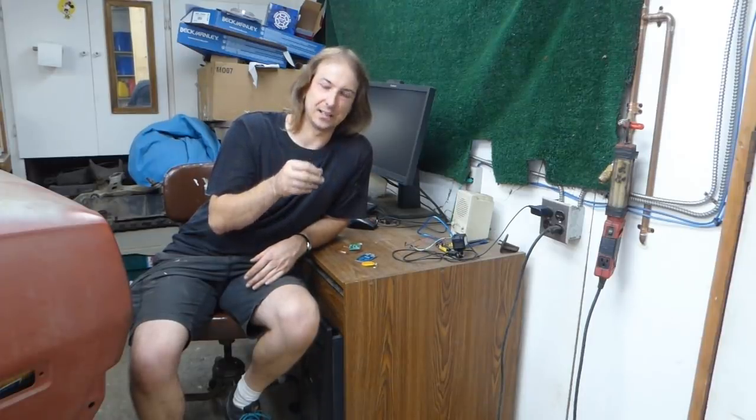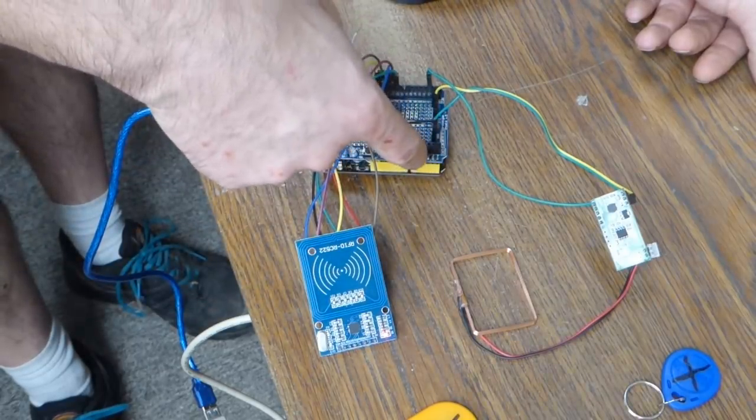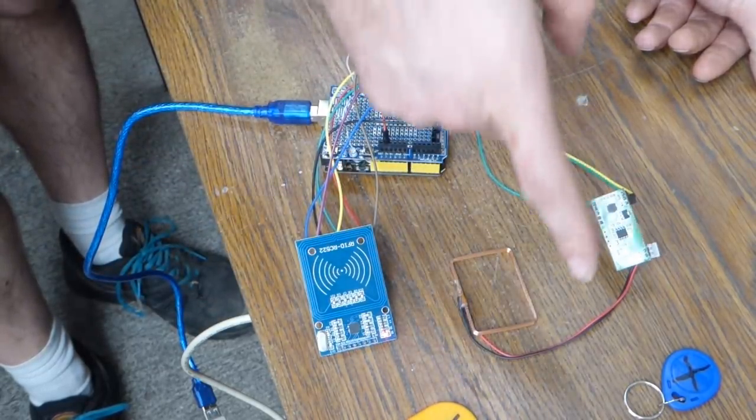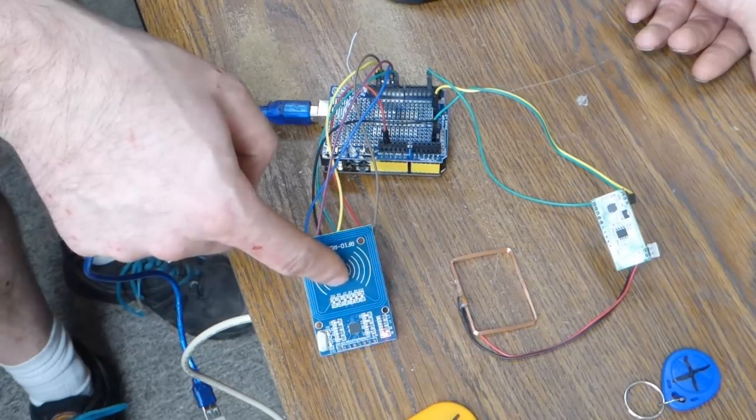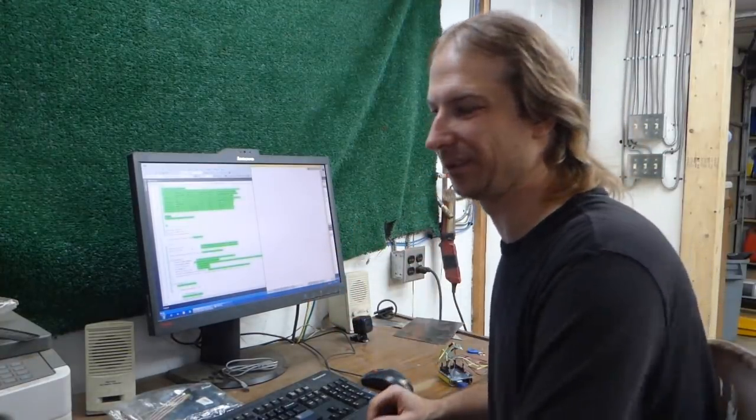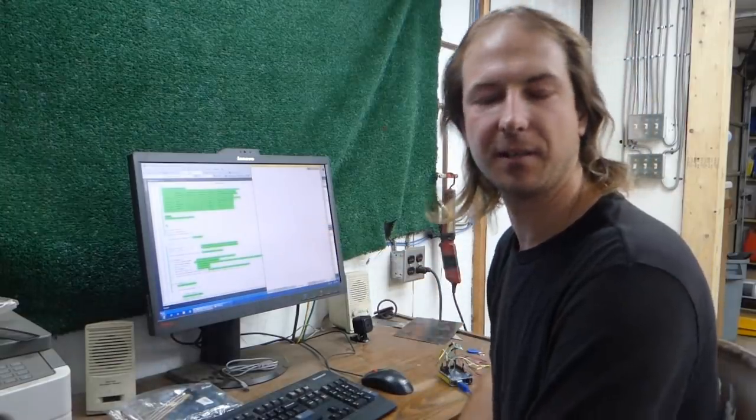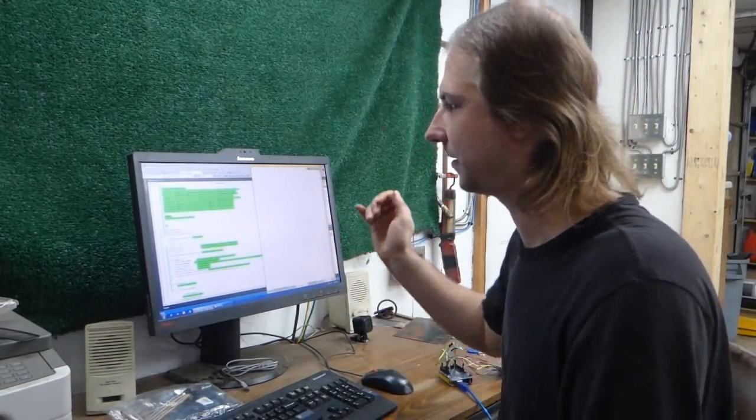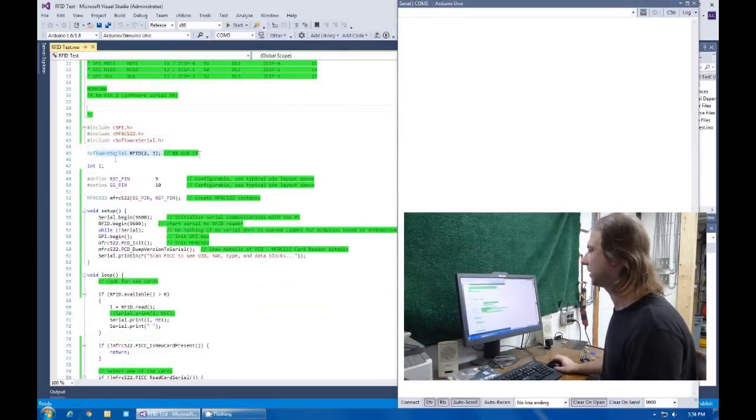I've created a very simple test rig for both readers. It's just an Arduino Uno connected via software serial to the 125 kilohertz reader, the 13.56 megahertz reader connecting through the SPI bus. There's really not much to the software. It took about seven minutes of copying and pasting because the 13.56 megahertz reader has a nice software library.